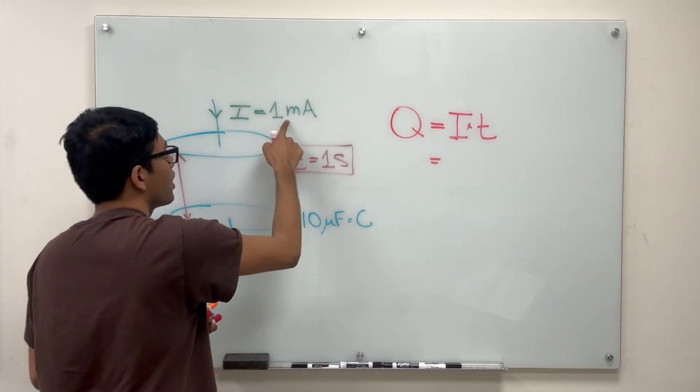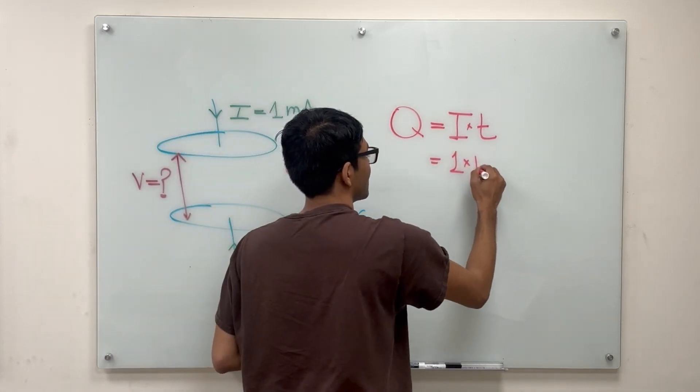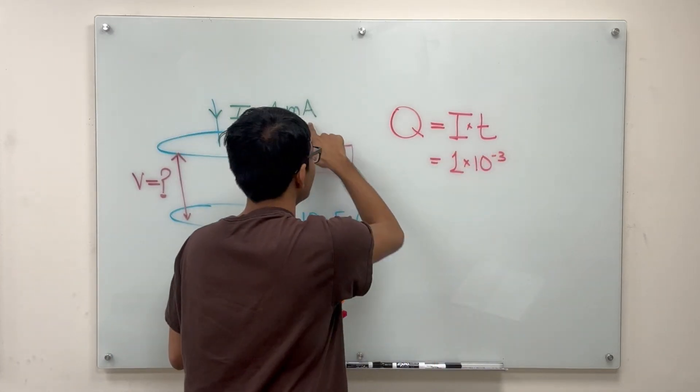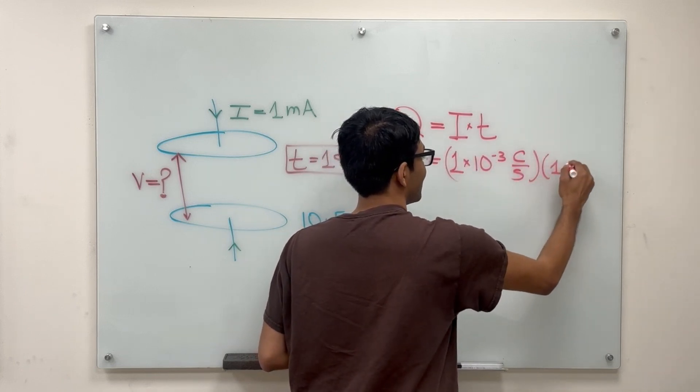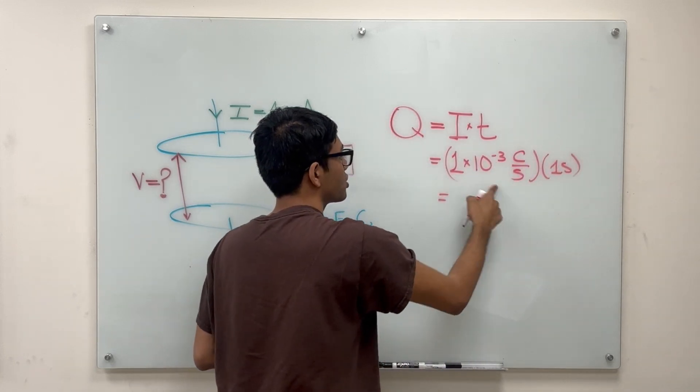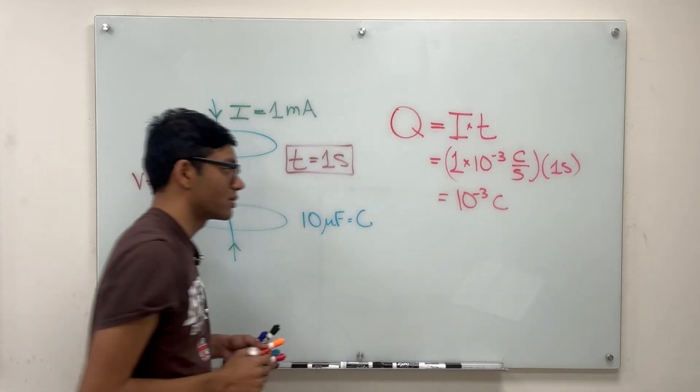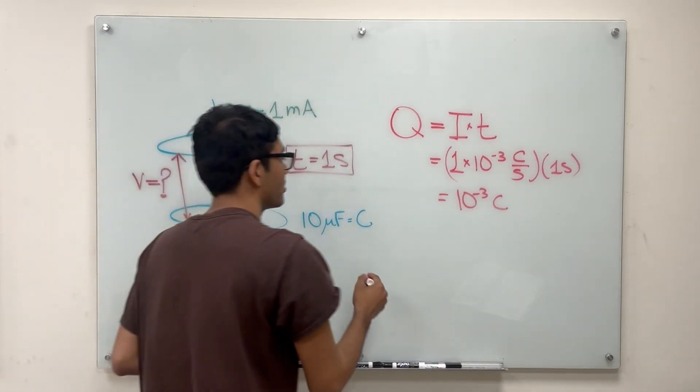So the current is 1 milliamp, 1 times 10 to the minus 3, and the current is in amps which is coulombs per second. If we wait one second that tells us that the charge on our plates is going to be 1 millicoulomb, or 10 to the minus 3 coulombs.